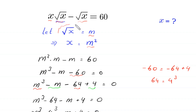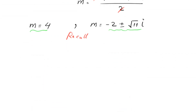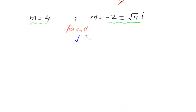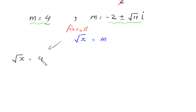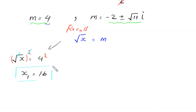Recalling that square root of x equals m, when m equals 4, the equation becomes square root of x equals 4. Squaring both sides, the square root cancels and we get x equals 4 squared equals 16. This is the first solution.